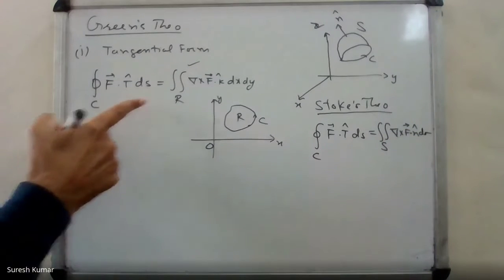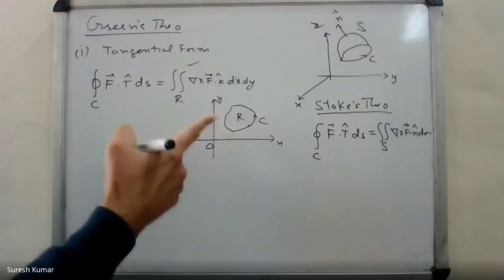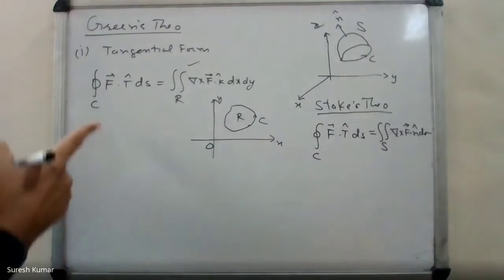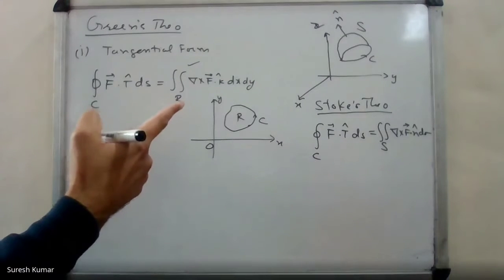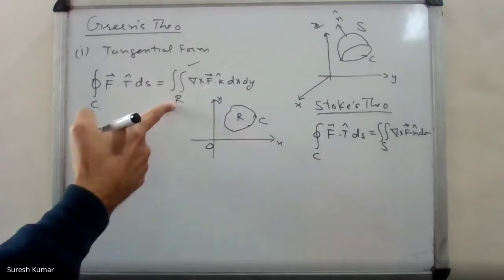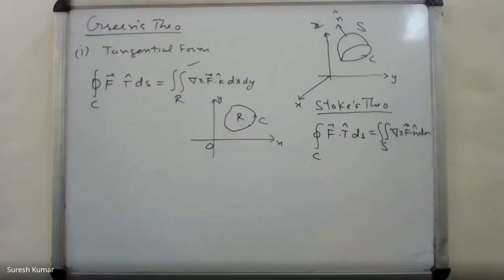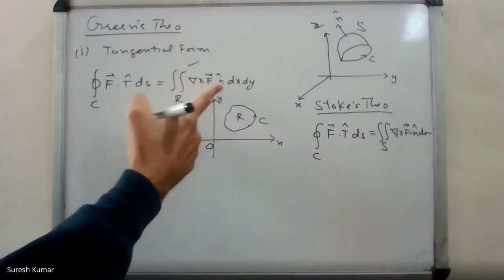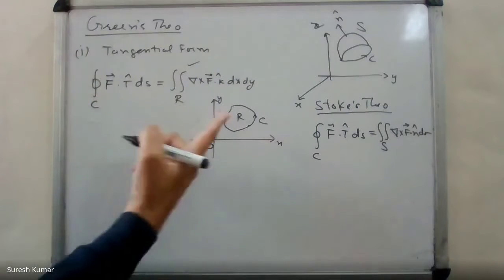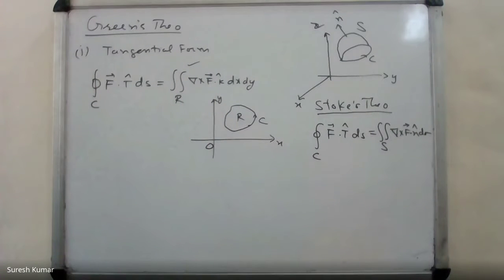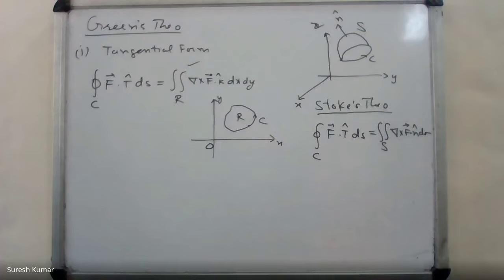See the difference between the two. In Green's theorem, the curve is in a plane; in Stokes' theorem, the curve is in space. Both calculate the counter-clockwise circulation. The formula changes: instead of a planar area R, you have a surface S. Curl of F dot k-hat becomes curl of F dot n-hat — a more generalized vector. The unit normal to the xy-plane is k-hat. So Stokes' theorem is a generalization of the tangential form of Green's theorem.